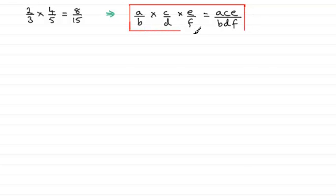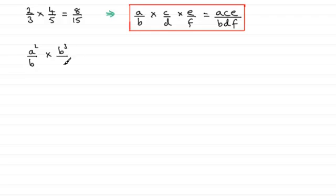Now I've got some examples we're going to work through, and at any point you might want to pause the video and have a go. Let's take a basic example: a squared divided by b, multiplied by b cubed divided by a to the power five. According to this rule, all we need to do is multiply a squared with b cubed to get a squared b cubed, then divide by a to the power five times b — I'm going to put a to the power five first.